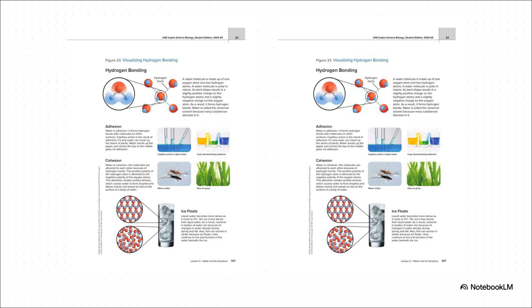And right here, you can see these properties in action. On the one side, adhesion lets water literally climb the walls of a plant's vascular tissue. That's how it drinks. And on the other, cohesion creates this powerful skin on the surface, a tension so strong it can actually support the weight of an insect. We're talking two totally different properties, all coming from one single cause, those hydrogen bonds.